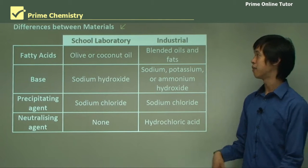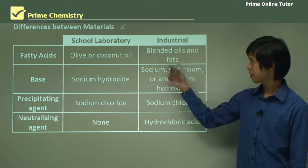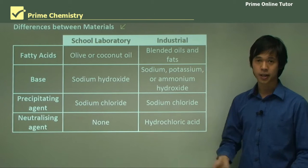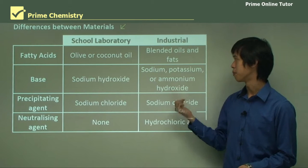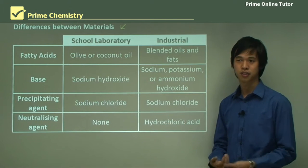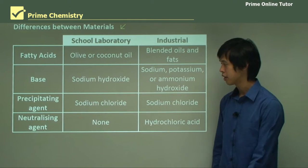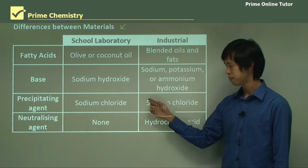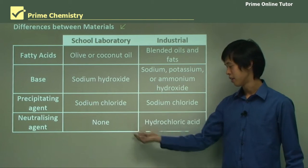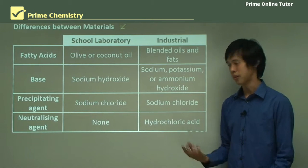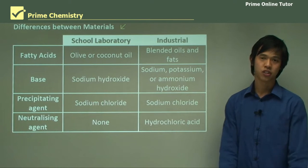Comparing school lab versus industrial soap making: in a school laboratory we use olive or coconut oil for the fatty acid, whereas in industry we blend oils and fats together. In school we use sodium hydroxide, while industry may use sodium, potassium, or ammonium hydroxide to maximise the process. The precipitating agent is the same in both cases — hot brine. In school we don't neutralise the soap, whereas in industry a little hydrochloric acid is added to remove leftover OH, which would otherwise dry out skin.